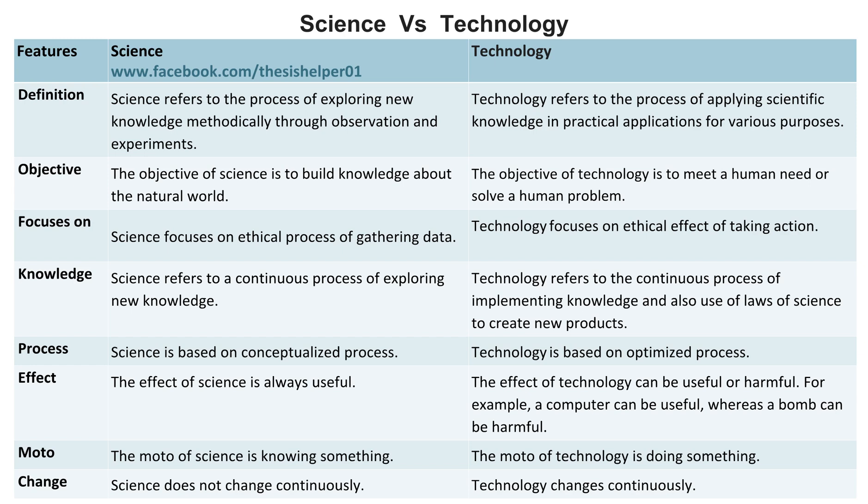The effect of science is always useful, whereas the effect of technology can be useful or harmful. For example, a computer can be useful, whereas a bomb can be harmful.